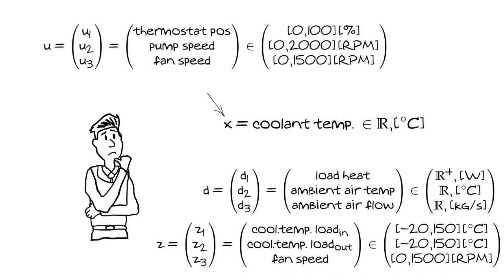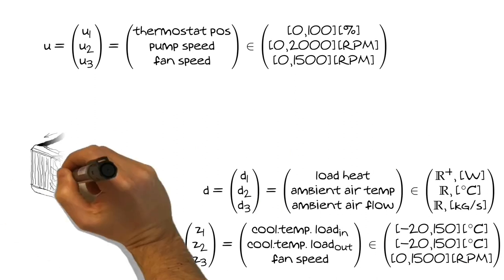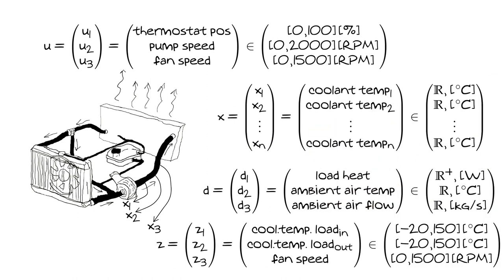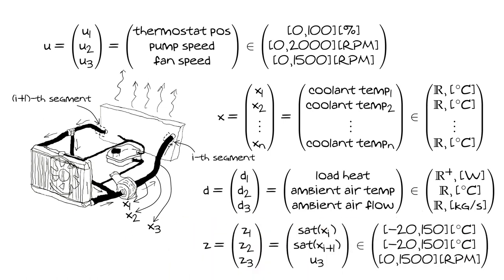We define only one state because the stakeholders want to control the coolant temperature, but the coolant temperature depends on where you measure it. To accommodate this, we divide the pipe into small segments and indicate with x1, x2, x3 and so on the coolant temperature at segment 1, 2, 3, etc. If we divide the pipe into n segments, we have n state variables. We indicate with i the segment at the inlet of the load and i+1 the segment at the outlet, and we can rewrite the measured output accordingly. The saturation accounts for the limited sensor operating range.